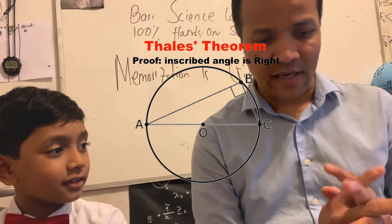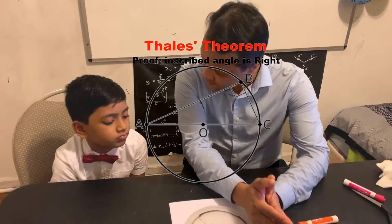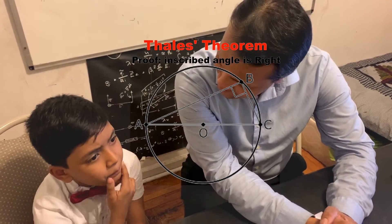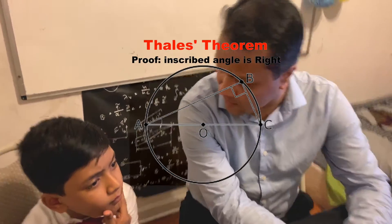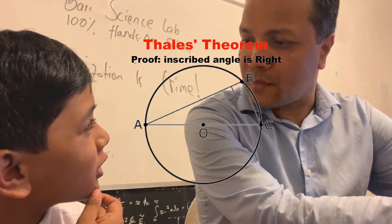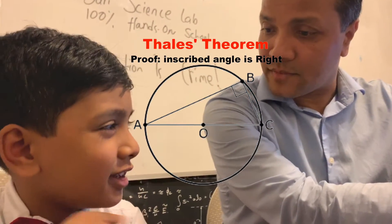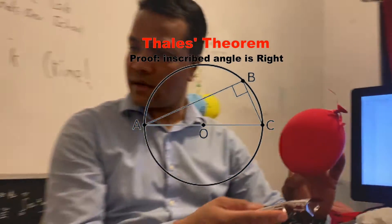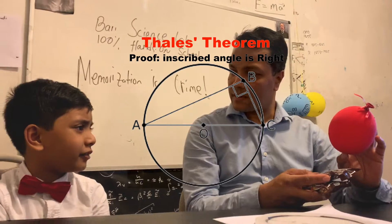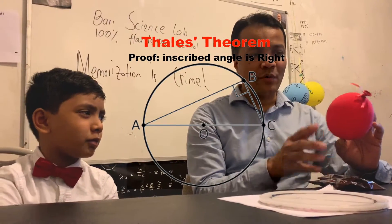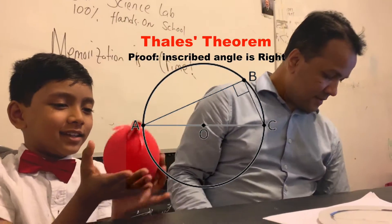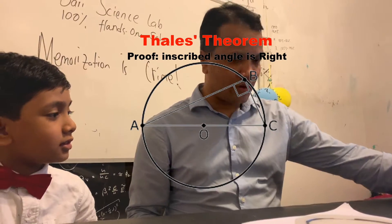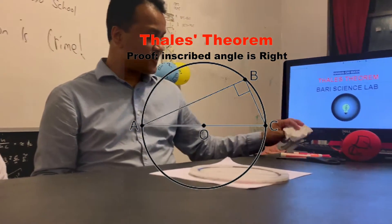Nice to see you again. I have a question for you. Tell me, what is an inscribed angle and why, according to Thales, is the inscribed angle a right angle? I don't know. Do you want to learn? Not really. I have some candies. I don't really want candies. I want a balloon. You want a balloon — I have some balloons. I'll give you a balloon at the end if you can do everything nicely and satisfactorily.